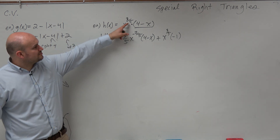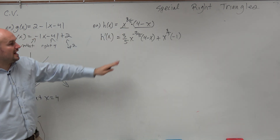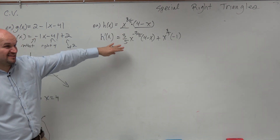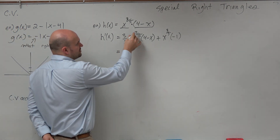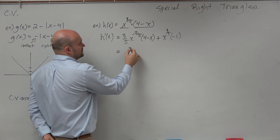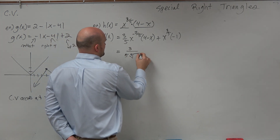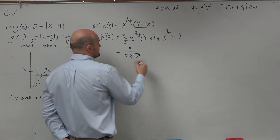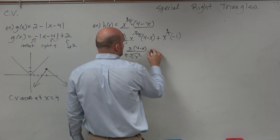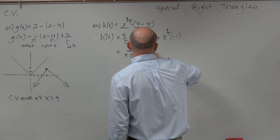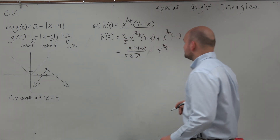Because I'm subtracting 1, which would be 5 over 5. Now, obviously, we want to get this looking the same, so we'd want to rewrite this with this in the denominator. So we could have 3 over 5 times the fifth root of x squared, and that's going to be times (4 minus x) minus x to the 3/5.